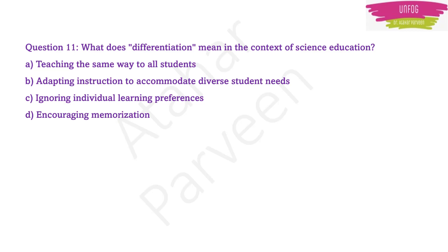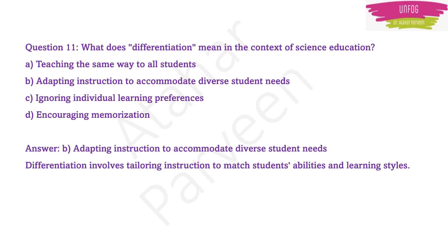The first question of this session: what does differentiation mean in the context of science education? The options are: teaching the same way to all students; adapting instruction to accommodate diverse student needs; ignoring individual learning preferences; encouraging memorization. The correct answer is adapting instruction to accommodate diverse student needs.